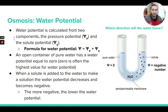There is a formula for water potential. To calculate the water potential of a sample of water or a solution, you need to know two things: the pressure potential and the solute potential. If you take the pressure potential and the solute potential and add them together, that equals the water potential.